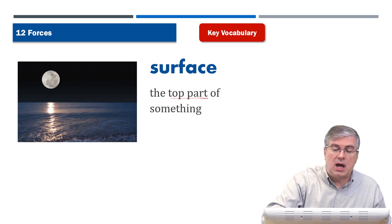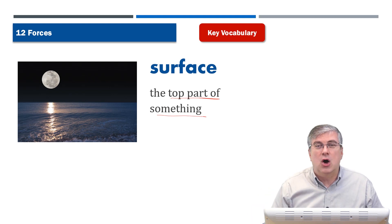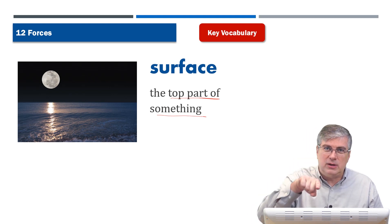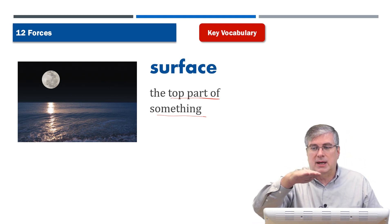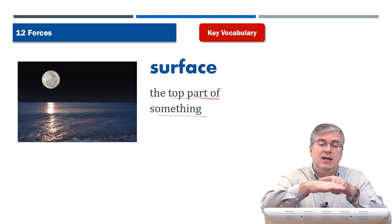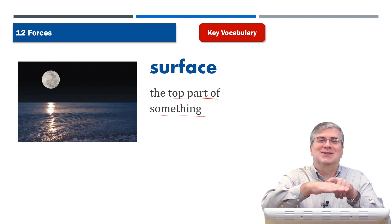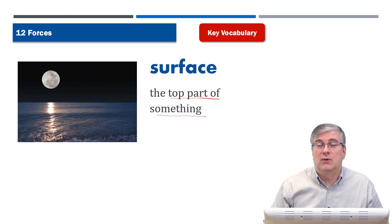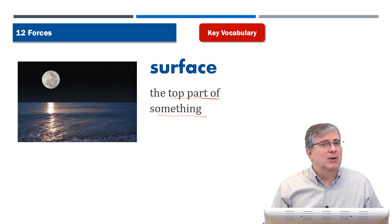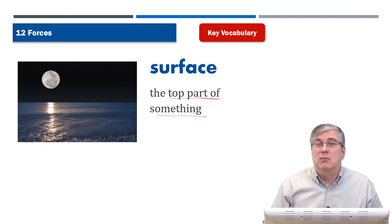The surface is the top part of something. The picture shows the surface of the ocean — we can't see underneath, only the surface. Similarly, we only see the surface of our skin. Those are our vocabulary words for this section — some are interesting, maybe a little difficult. Let's explore them in more detail in the reading section.